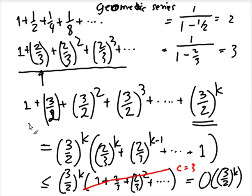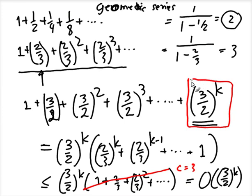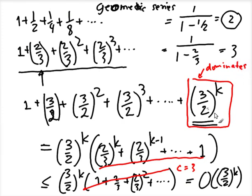So to summarize: if you have a sum that goes down (ratio less than 1), it's a geometric series that converges to a constant. But if you have a sum that goes up (ratio greater than 1), you factor out the last term, get a geometric series again, and the last term dominates the whole sum.